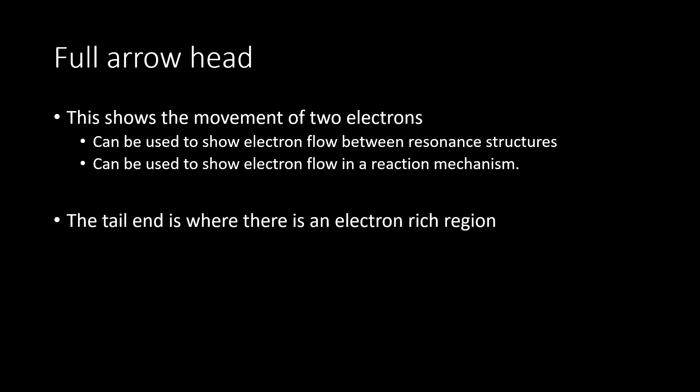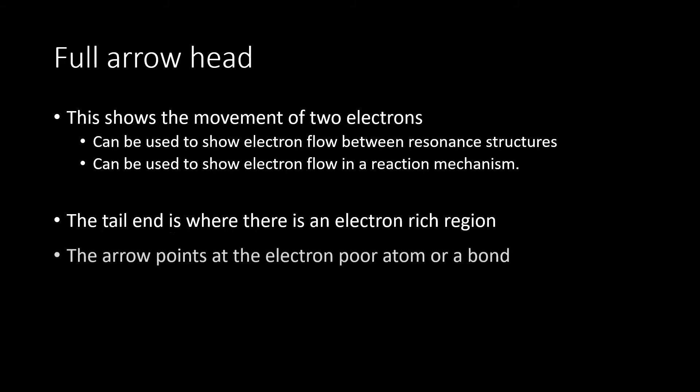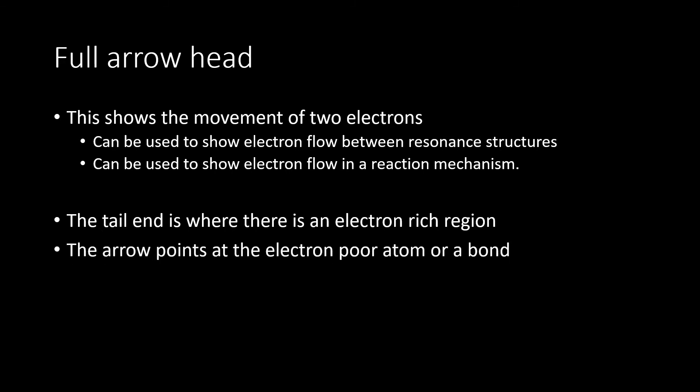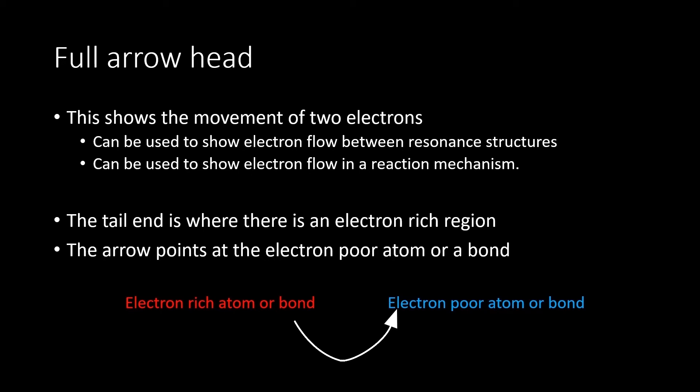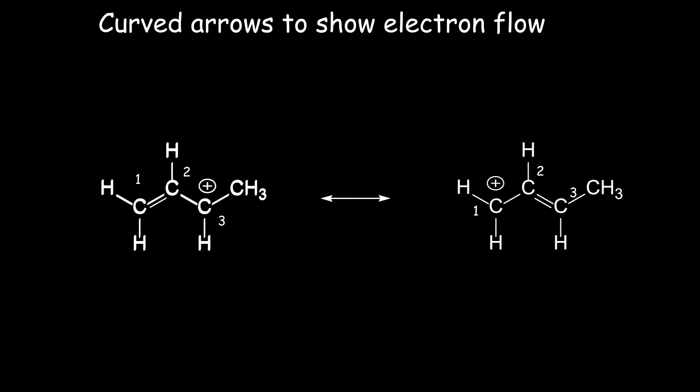The tail end of the full arrowhead arrow is where there is an electron-rich region — where there is a pair of electrons, either a lone pair or a covalent bond. The arrow points at the electron-poor atom to give it a lone pair, or to a bond to make a double or triple bond. Here is an animation of the process: as you draw the arrow on paper, this is how it would go, and the final result is what is reported. This is an animation of curved arrows between resonance structures.